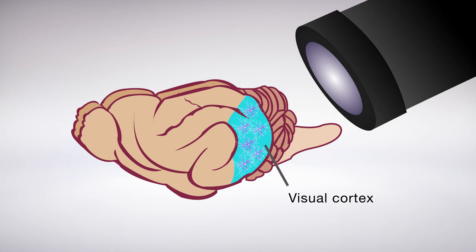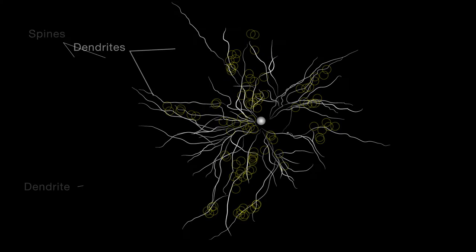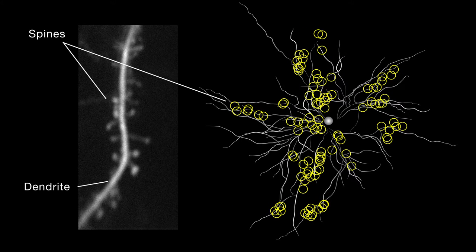Cortical neurons receive information from earlier in the visual pathway through tree-like extensions called dendrites. The dendrites are covered with tiny bumps called spines, where information is transferred between neurons.